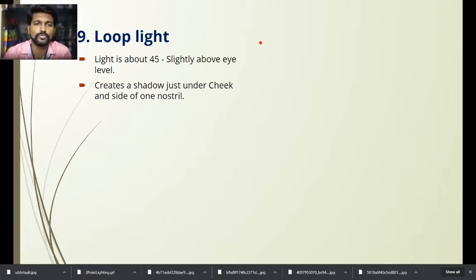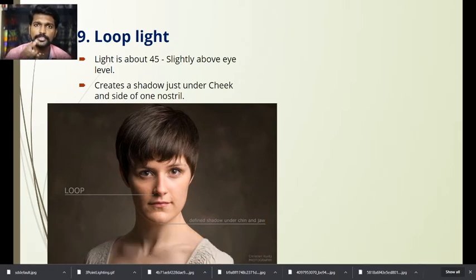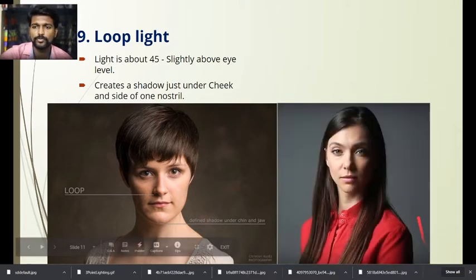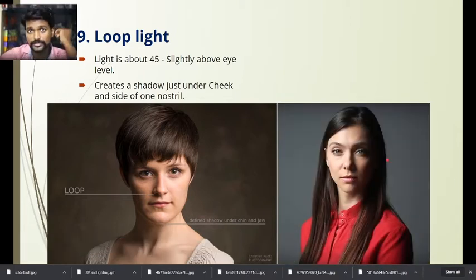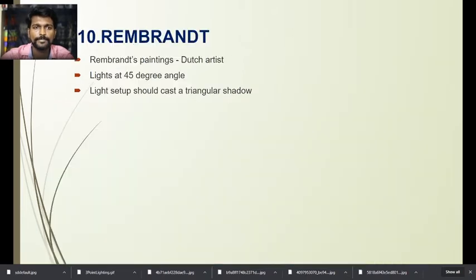The ninth type is loop lighting. The light is placed at about 45 degrees and slightly above eye level. This type of lighting creates a shadow under the cheek and on one side of the nose, which is the characteristic loop shadow. In the examples, a single light is placed above eye level to achieve this effect.